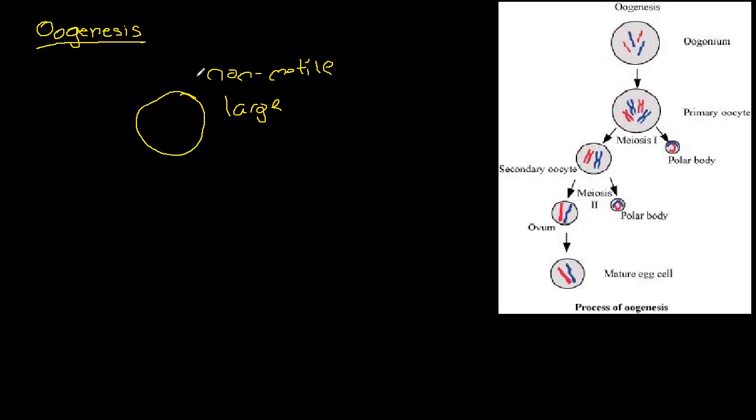It's large in comparison to the sperm cell, of course. Now let's go over here to the creation of the ovum. It starts with an oogenium that differentiates into the primary oocyte.